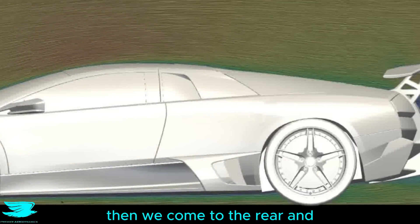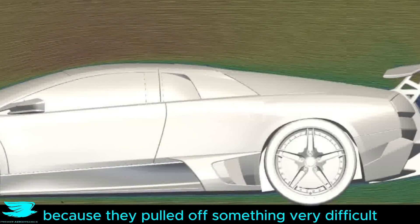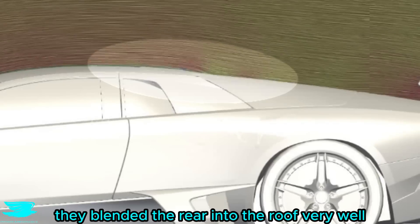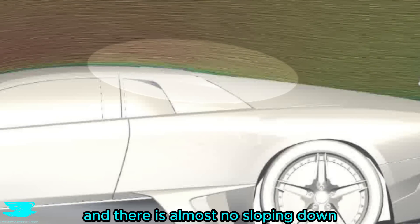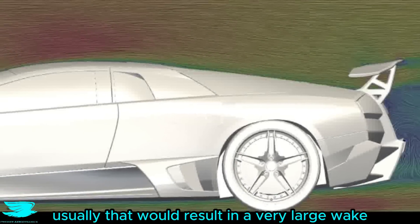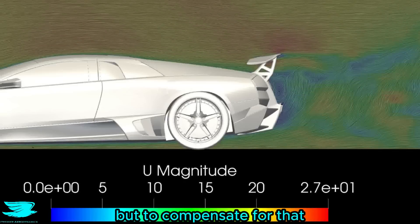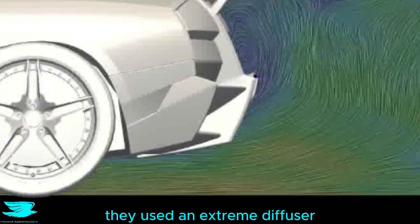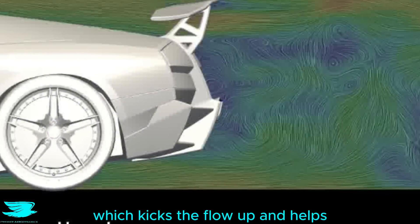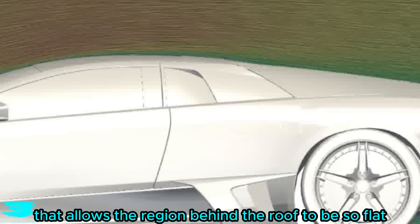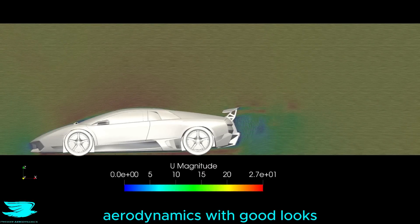Then we come to the rear, and credit to Lamborghini because they pulled off something very difficult. They blended the rear into the roof very well, and there is almost no sloping down. Usually, that would result in a very large wake because the back of the car would be very large. But to compensate for that, they used an extreme diffuser which kicks the flow up and helps reduce the wake size. That allows the region behind the roof to be so flat. So they managed to blend aerodynamics with good looks here.